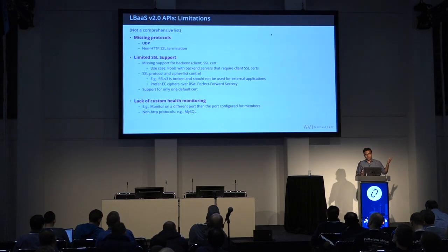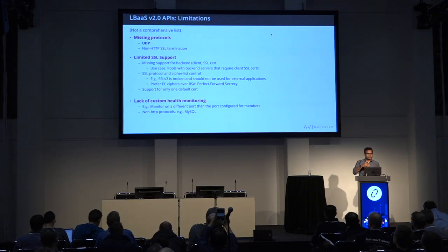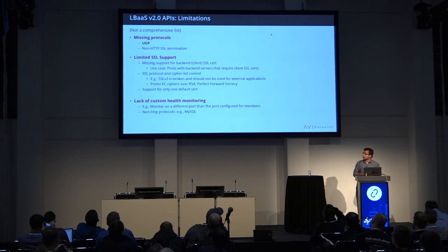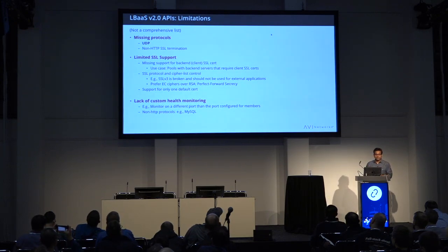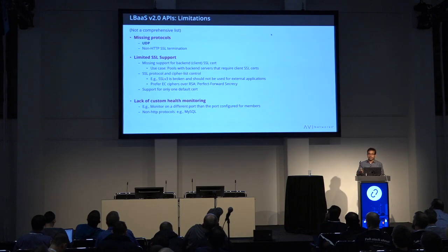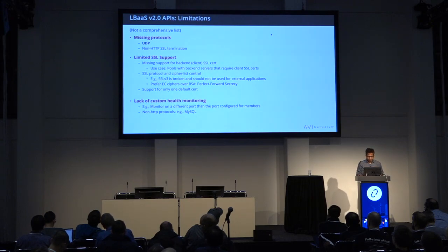LBaaS V2 was a big jump over LBaaS V1. But as you go up the virtualization stack from L2/L3/L4 to load balancers, the number of things you need to virtualize grows considerably. There are still things missing from LBaaS V2 — missing protocols, limited SSL support where you couldn't specify which ciphers to use or exclude deprecated ones, and there was only support for one default health monitoring set with limited options.